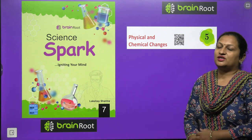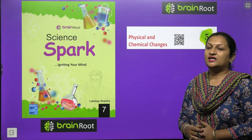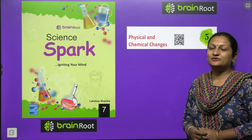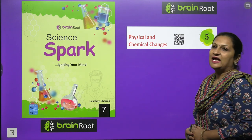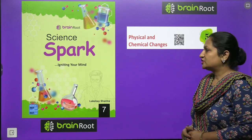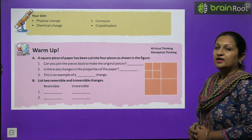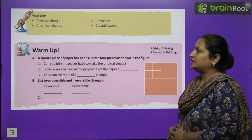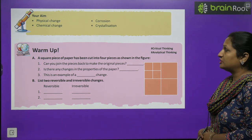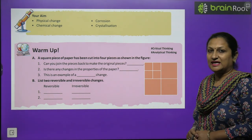Hello, my dear children. This is Shikha Arora and today we are going to start with Class 7 Science Chapter 5 - Physical and Chemical Changes. The main topics of this chapter will be physical changes, chemical changes, corrosion, and crystallization.